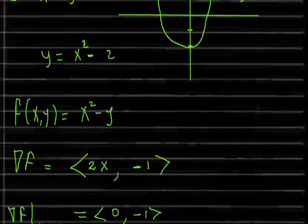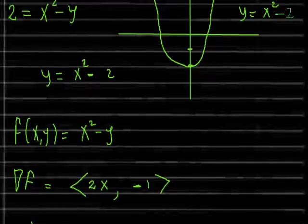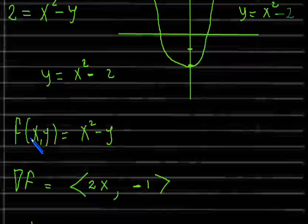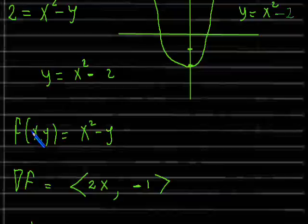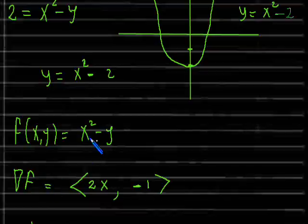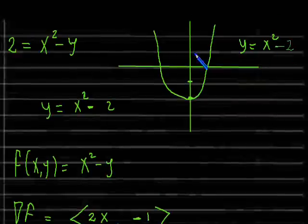So now what I wanted to explain is that in general, the level sets of this curve have the property that they are perpendicular to the gradient of this function f(x, y), when evaluated at the points on the level curves. So let me tell you what I mean by that.